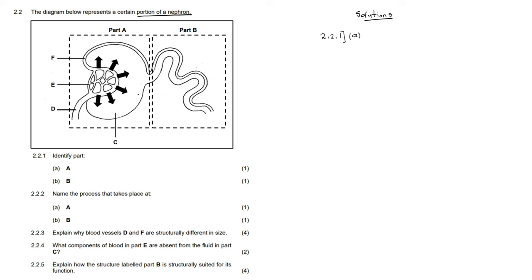You can see that part A is this first part that has got a cup-shaped structure, and part B looks like a tube. We can also see that there are arrows here indicating that something is coming from part E and moving into this cup. These arrows are very important to interpret.